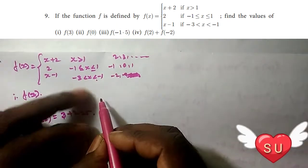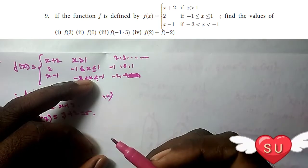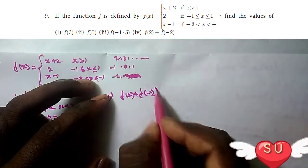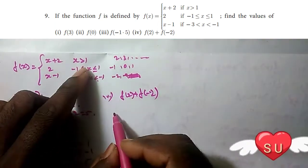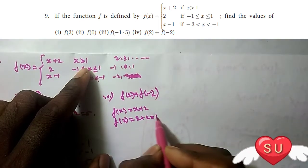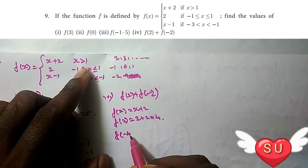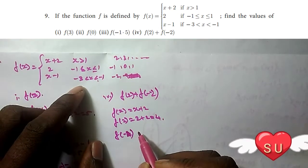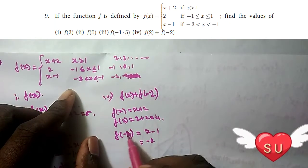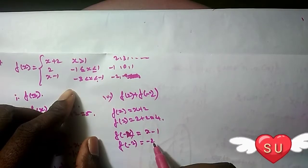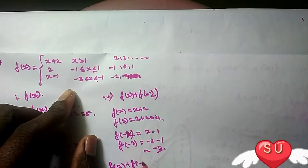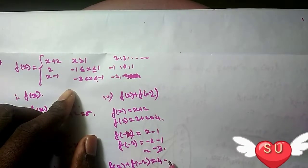Fourth question: find f(2) + f(minus 2). For f(2): since 2 is greater than 1, we use f(x) = x + 2, so f(2) = 2 + 2 = 4. For f(minus 2): since minus 2 is in the range minus 3 to minus 1, we use f(x) = x minus 1, so f(minus 2) = minus 2 minus 1 = minus 3. Therefore f(2) + f(minus 2) = 4 + (minus 3) = 1.